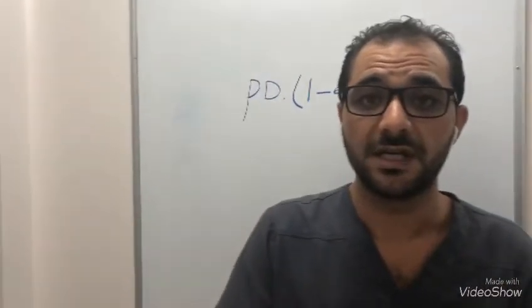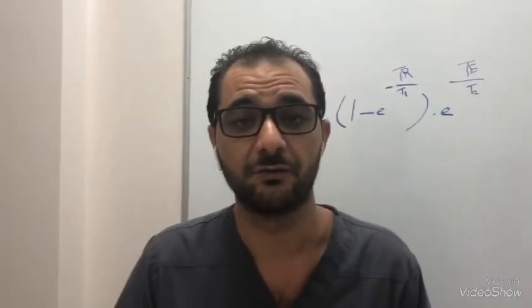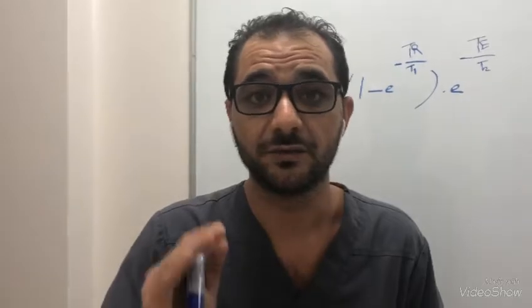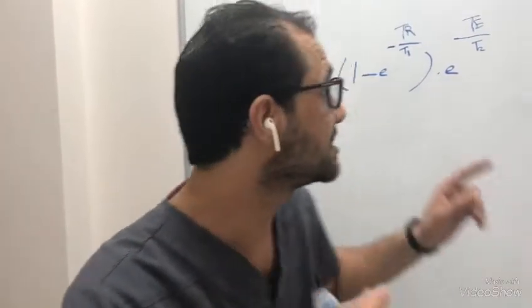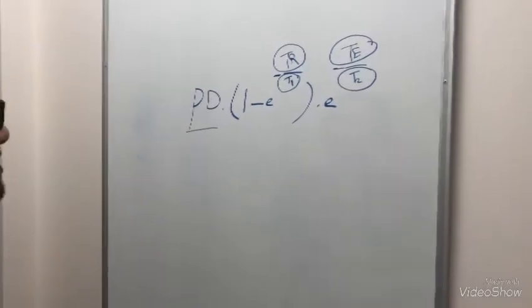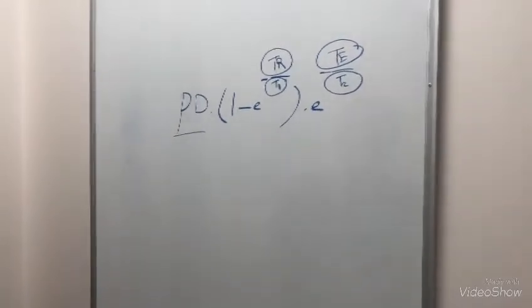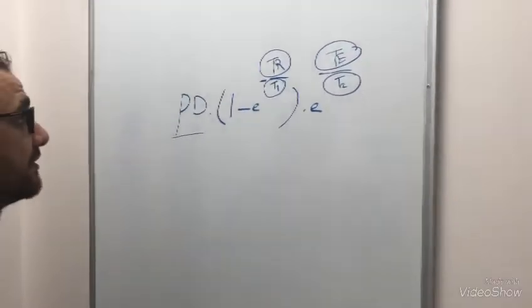If we have any signal from any voxel, from any tissue, will give us this equation. If we look for this equation, we will find five variables.